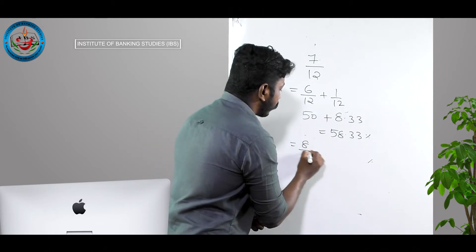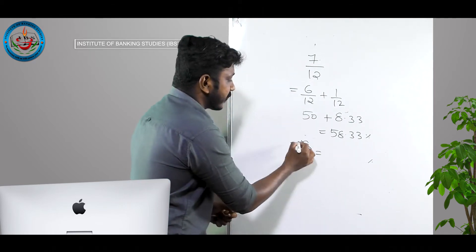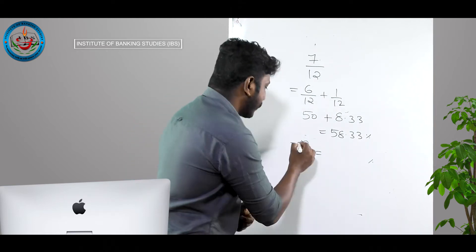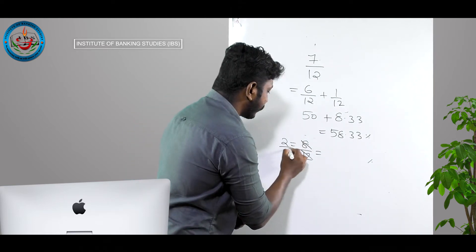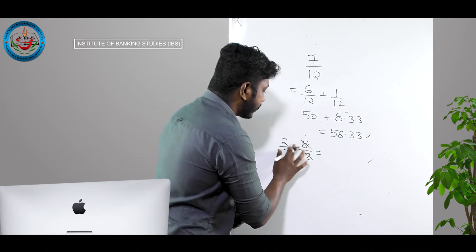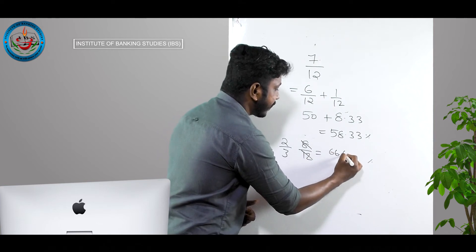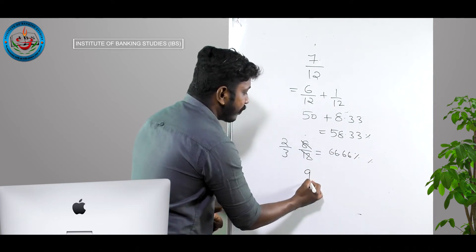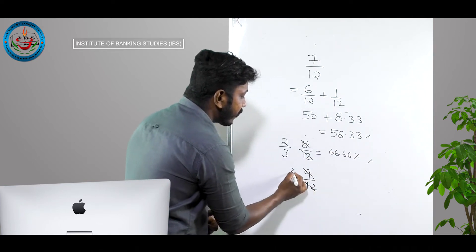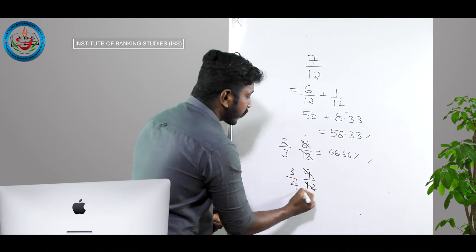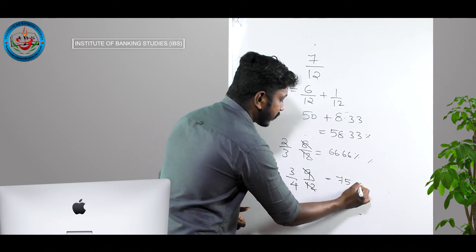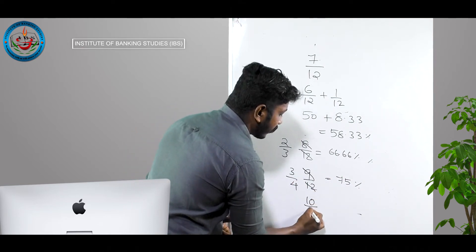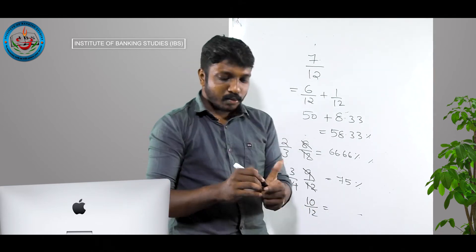8/12 simplifies to 2/3, so the answer is 66.66%. 9/12 simplifies to 3/4, which is 75%.